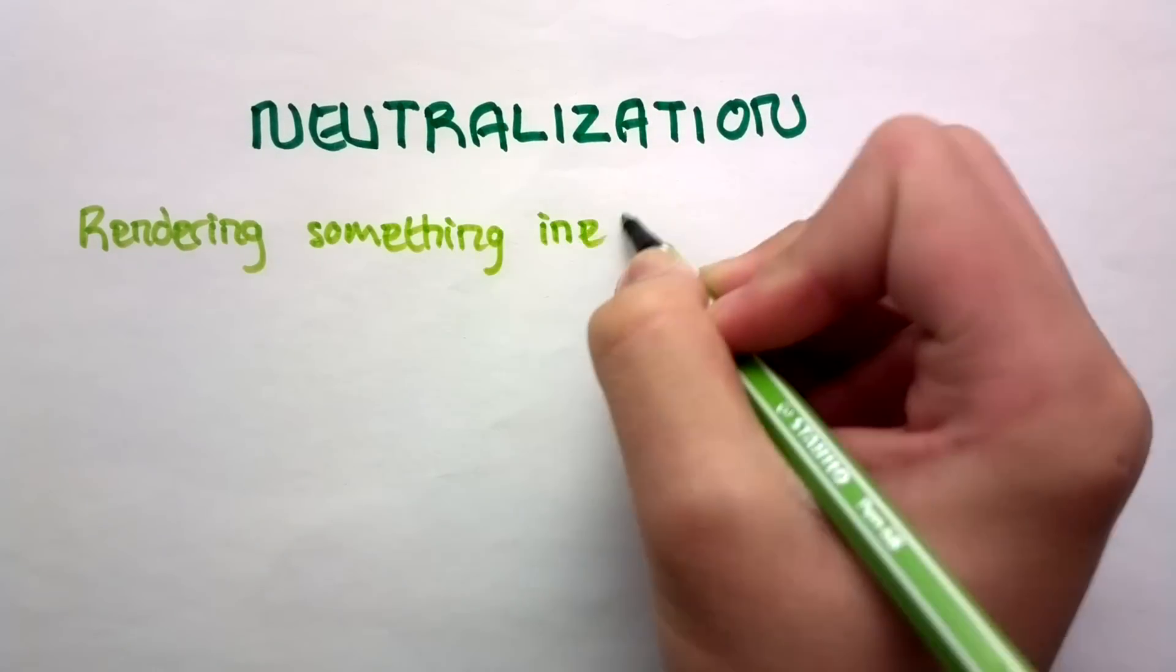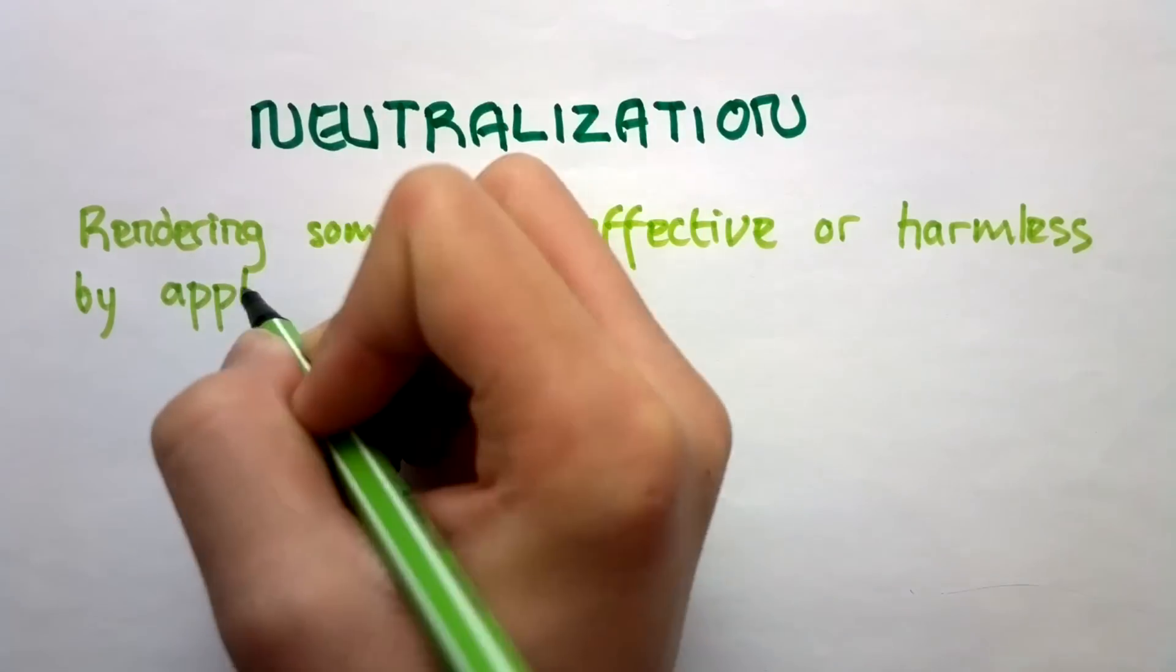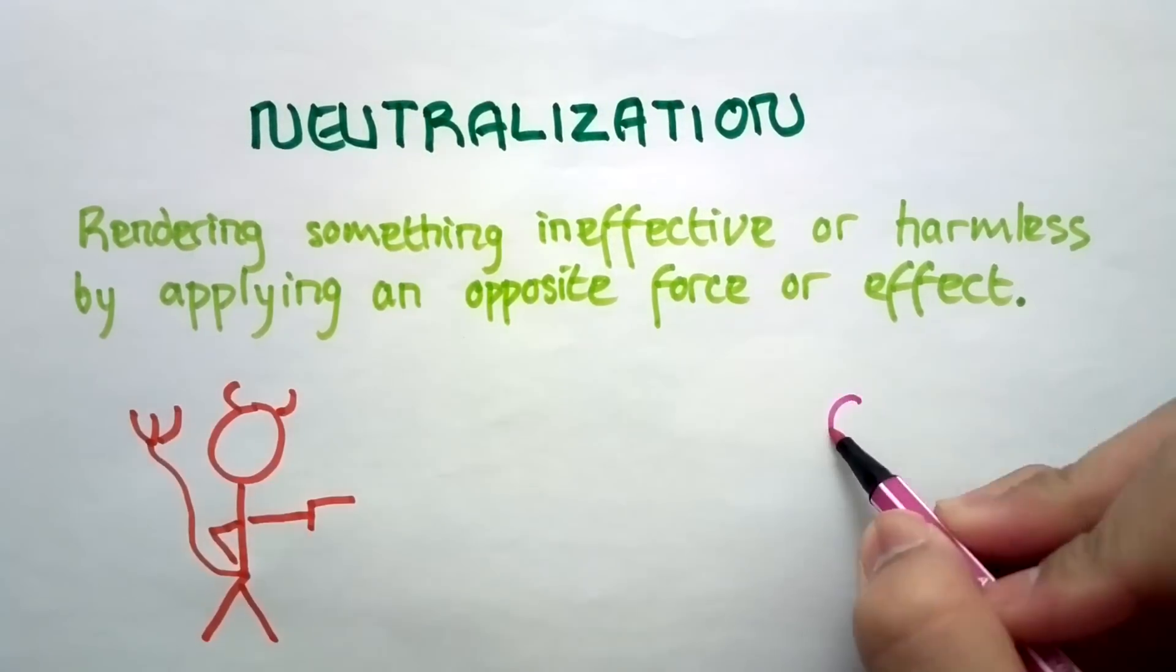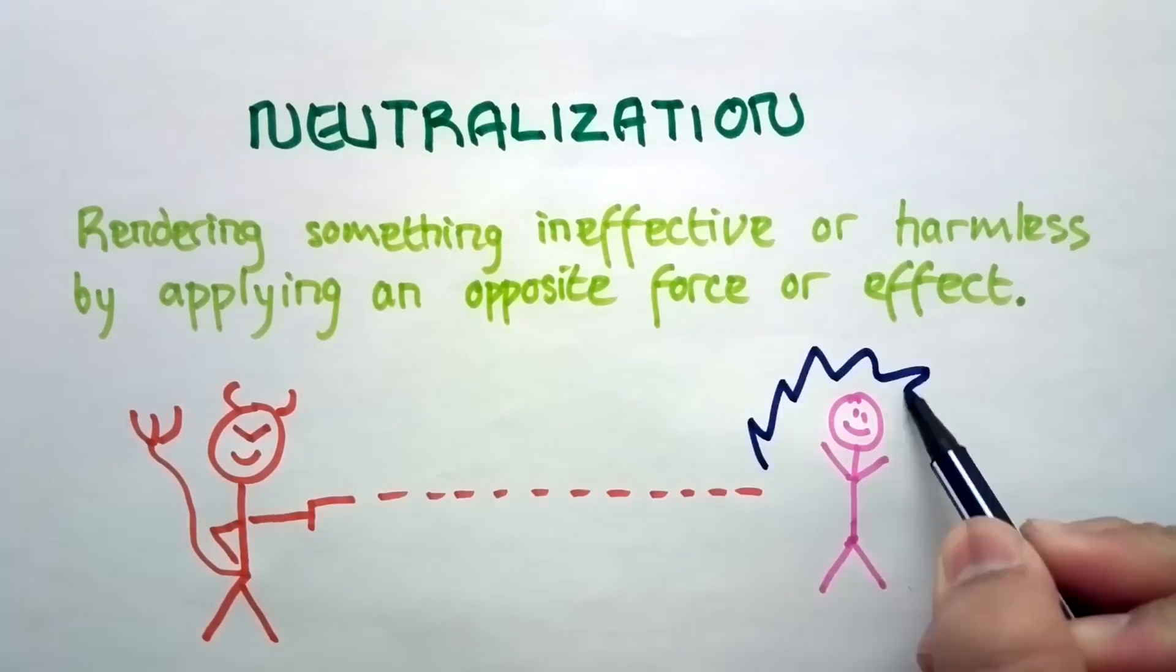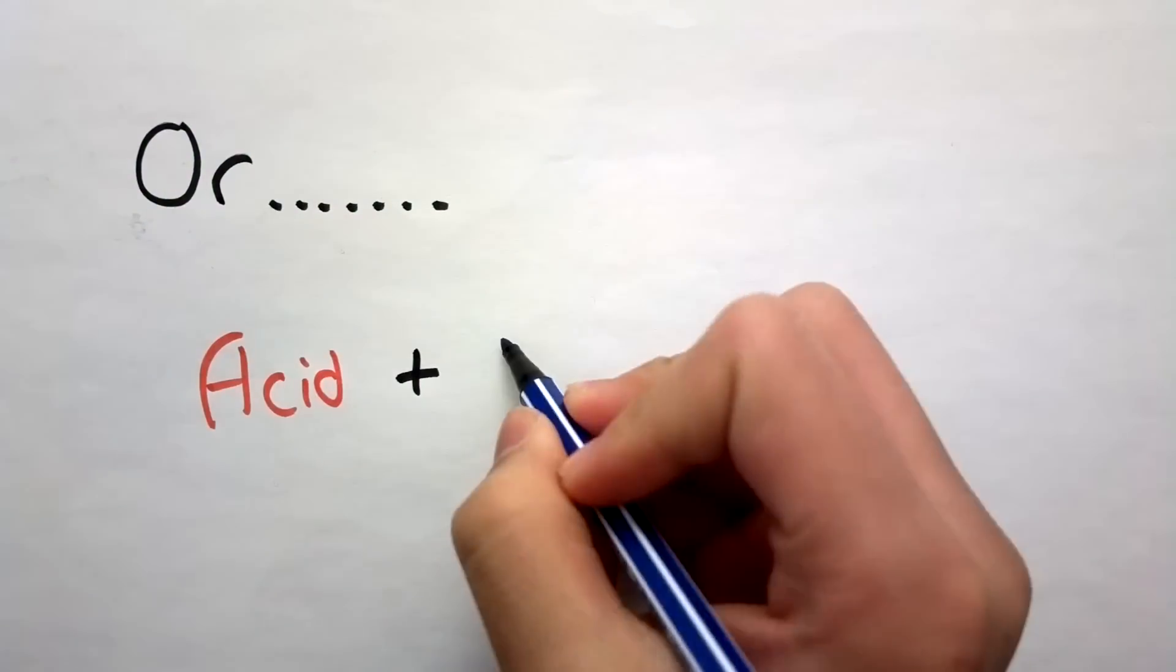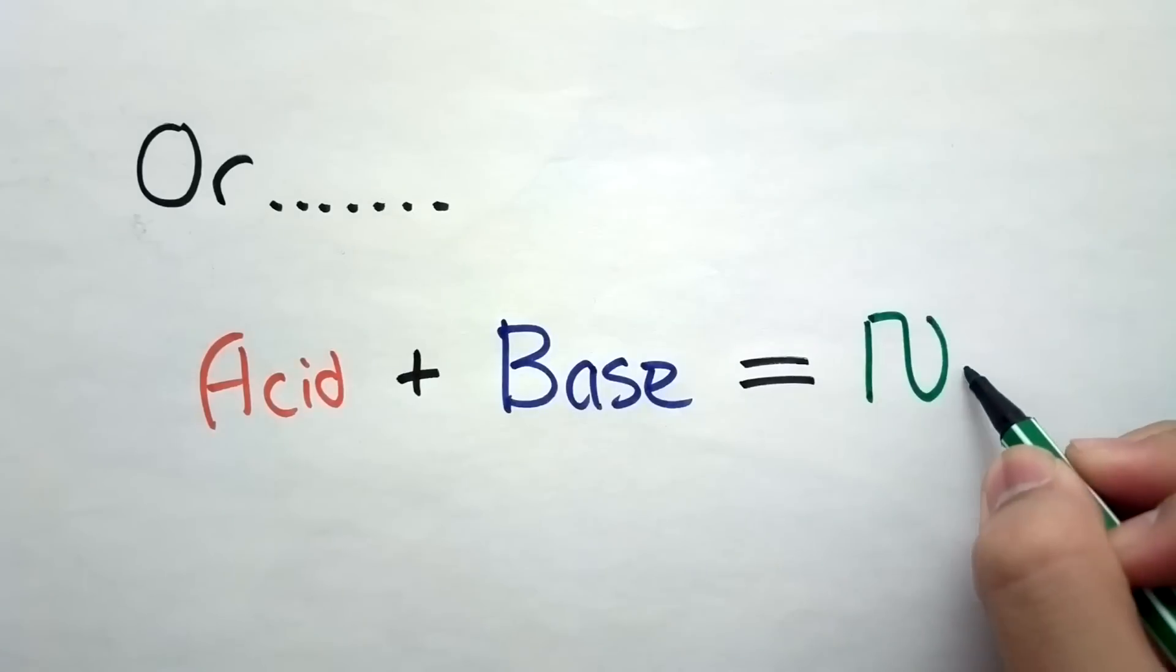Neutralization. By definition, it means to render something ineffective or harmless by applying an opposite force or effect. So it could mean to kill someone you really don't like, or it could mean when an acid and a base react to create a neutral solution.